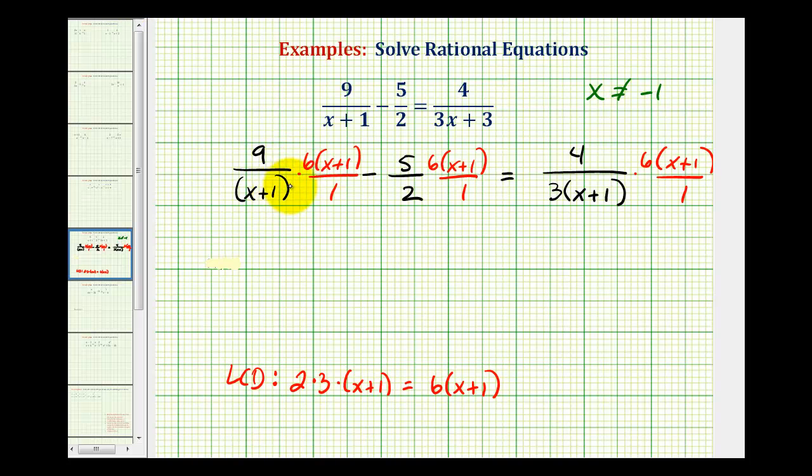Now before we find these products, let's simplify. Notice for this first product, we have a factor of x plus 1 over a factor of x plus 1. So now the denominator is equal to 1, and our numerator is 9 times 6. So now we have 54 minus, here a factor of 2 simplifies. This simplifies to 1, this simplifies to 3, leaving us with 15 times the quantity x plus 1 equals,